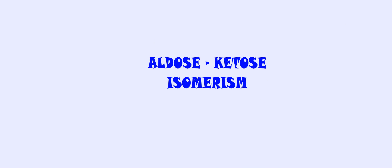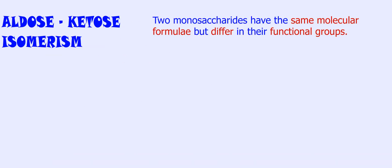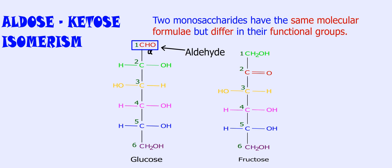3. Aldose-ketose isomerism. Two monosaccharides have the same molecular formula but differ in their functional groups. One has an aldehyde group and the other has a ketone group.